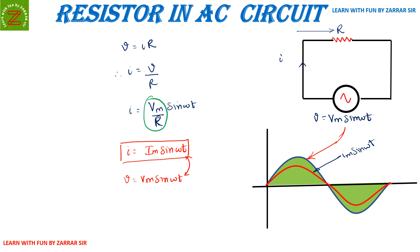I hope you've understood the fundamentals related to the behavior of a resistor in an AC circuit. In the next lecture we'll cover the behavior of an inductor, followed by a capacitor. Once we've covered all three — resistor, capacitor, and inductor — we'll move towards series and parallel concepts. Thanks a lot, do like and subscribe to my channel!